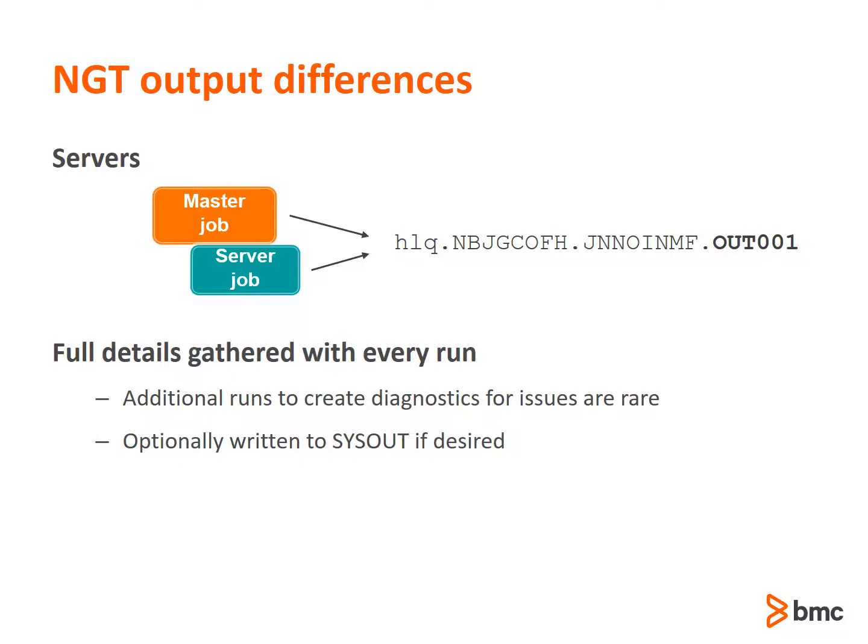The journal file contains highly detailed information about the utility itself, the objects it was operating on, and can be used by BMC customer support for problem determination. Journal output could also be written to sysout if desired, but tends to be verbose. The journal VSAM file inherits its name using the value of the plus-work-prefix, followed by two nodes uniquely generated by the utility itself, and finally ending in .out001. Journal output usually provides BMC support enough information about a problem that the need to rerun or recreate a problem is rare.